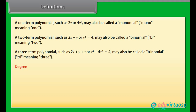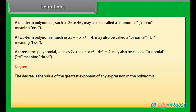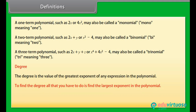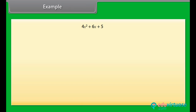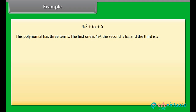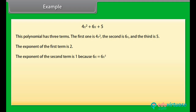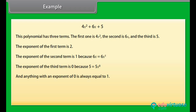Degree: The degree is the value of the greatest exponent of any expression in the polynomial. To find the degree, all you have to do is find the largest exponent in the polynomial. Example: 4x squared plus 6x plus 5. The exponent of the first term is 2, the second term is 1 (since 6x equals 6x to the power 1), and the third term is 0 (since 5 equals 5x to the power 0, which equals 1).